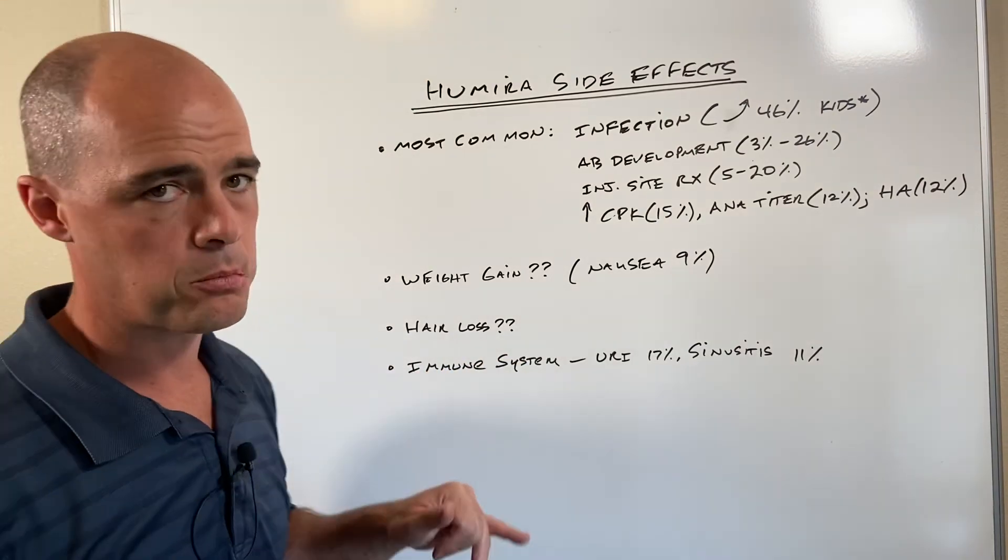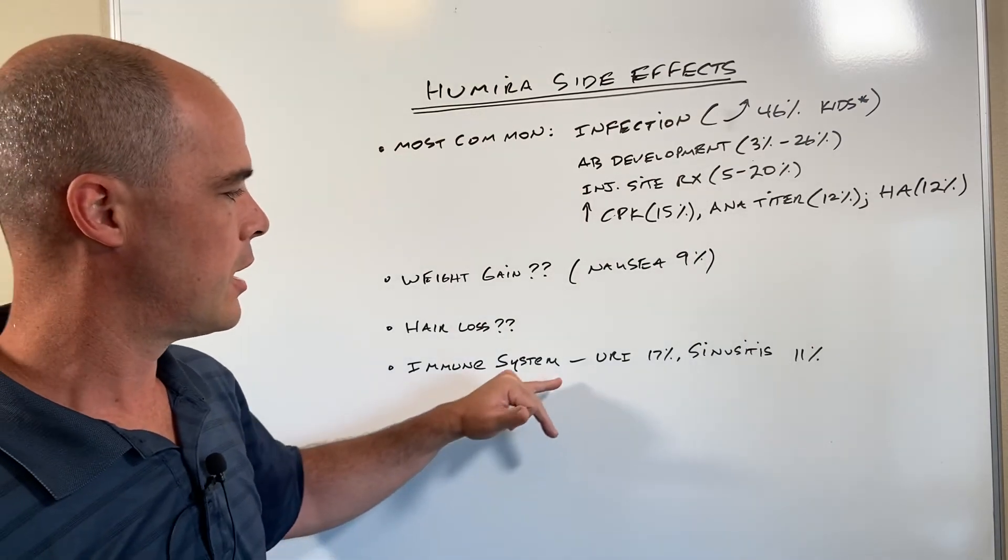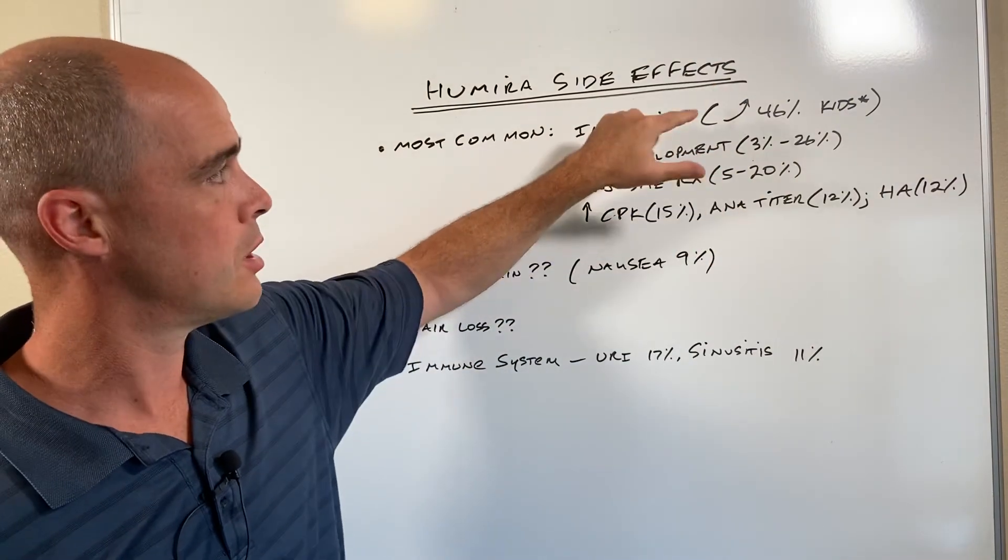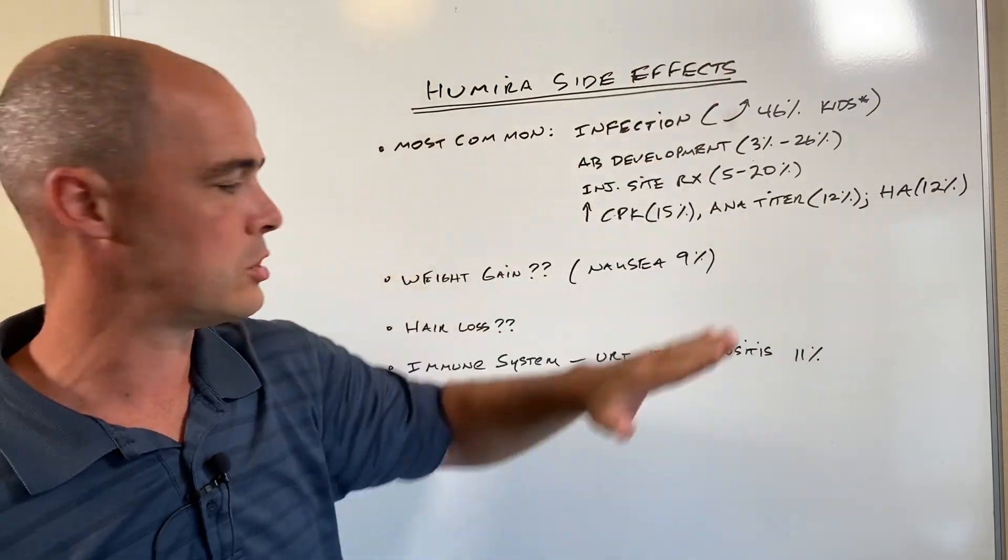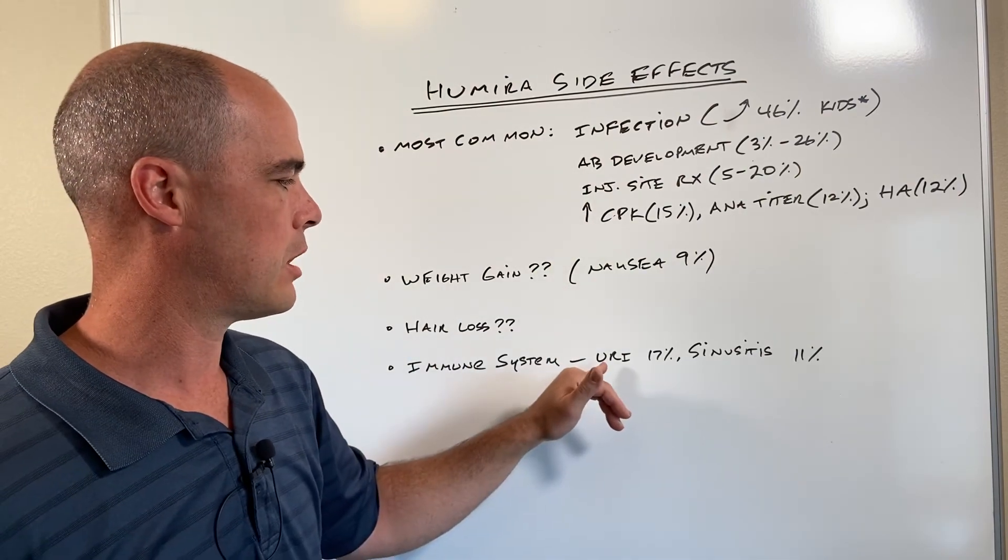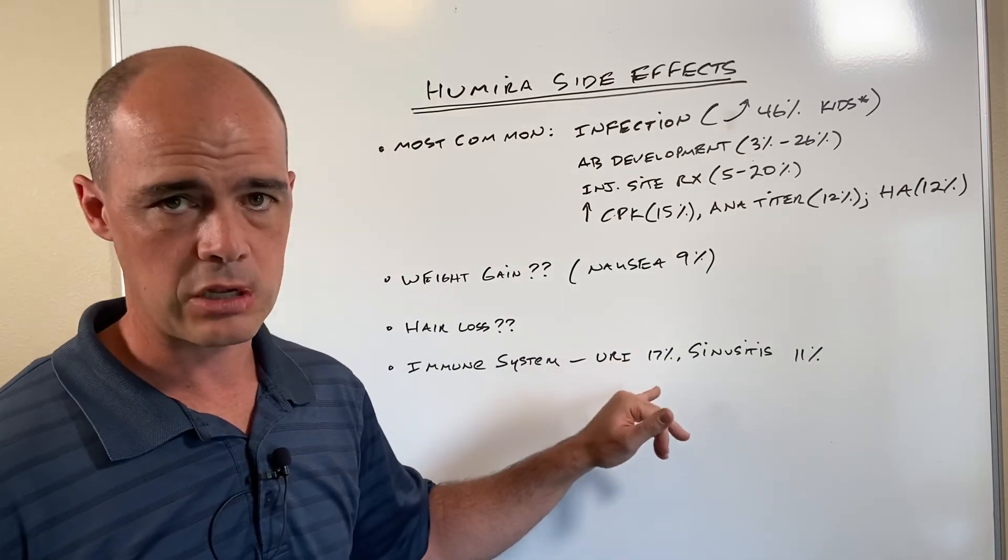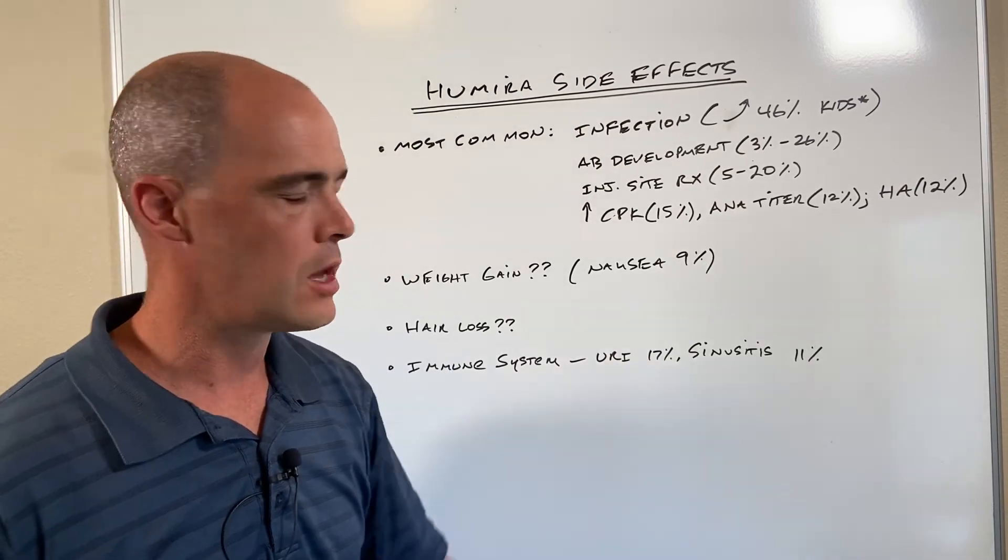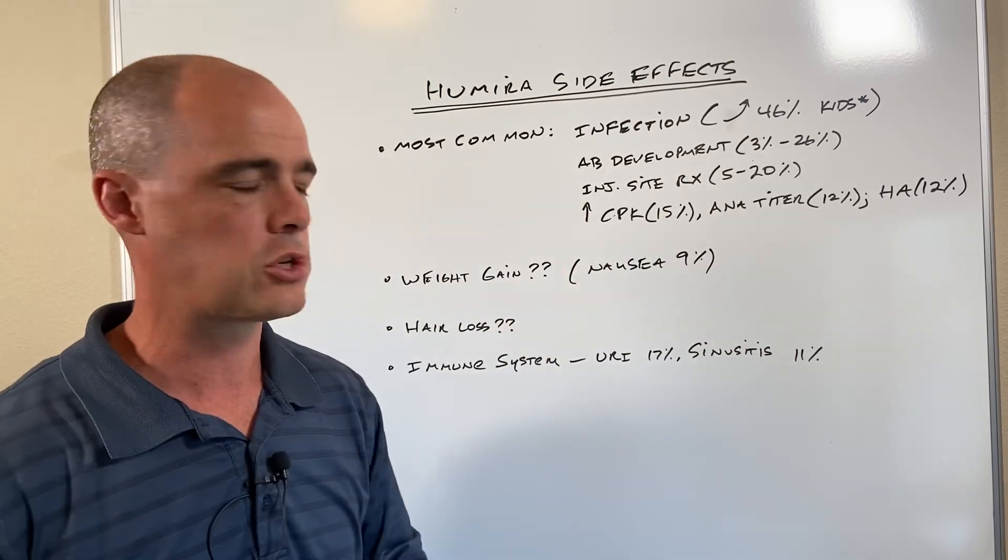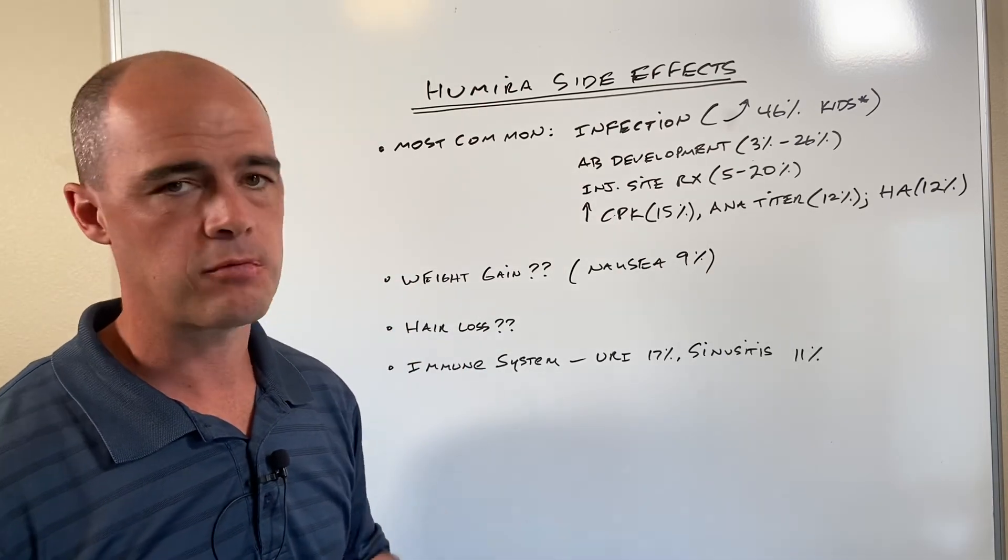Again, I want to drive home the point, if there's something you're going to see, it's generally immune system and a couple of other ones. We talked about the kids, 46% up to—again, that arrow means up to 46%, not that 46% of kids will get an infection—but URI is upper respiratory tract infection. We can see that in up to 17% of folks in studies, and then sinusitis, inflammation of the sinuses, sinus infection, that head pain that comes along can happen in roughly 11% of folks.